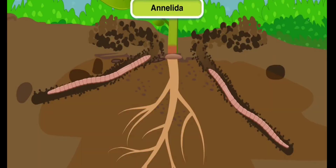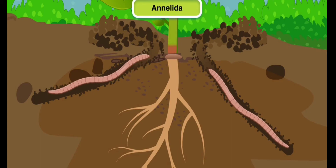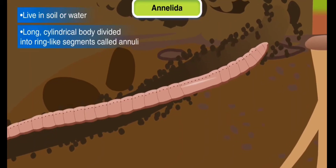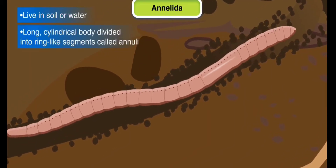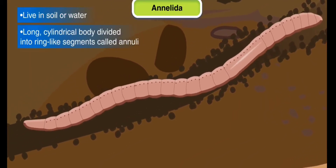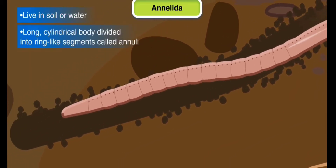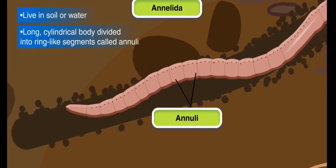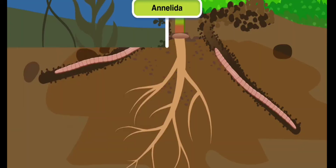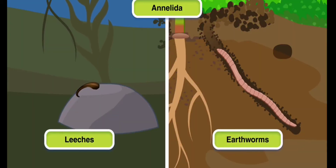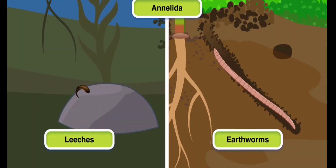Phylum Annelida: Annelids are worms that live in soil or water. They have a long, cylindrical body divided into ring-like segments called annuli. Leeches and earthworms are some examples.